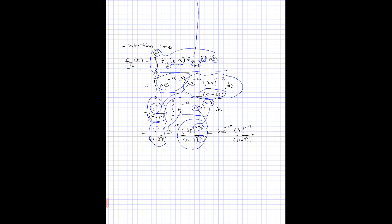Now we are almost done. We simplify: certain terms cancel each other out, and this multiplied by that becomes the final expression. What we are left with is exactly what we wanted to show — the gamma distribution. So that's it, thank you.